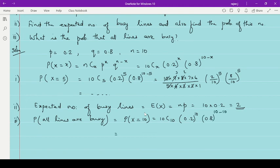10C10 means 1. So that is 0.2 raised to 10 and 0.8 raised to 0, 0.8 raised to 0 is 1. So here the answer will be 0.2 raised to 10.